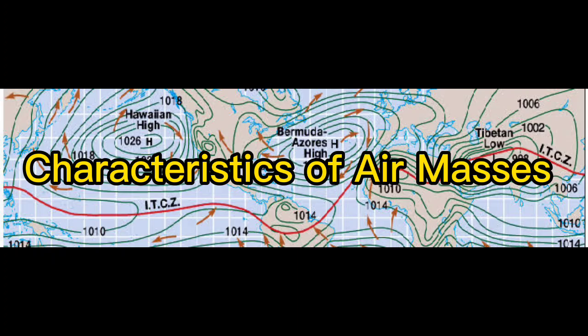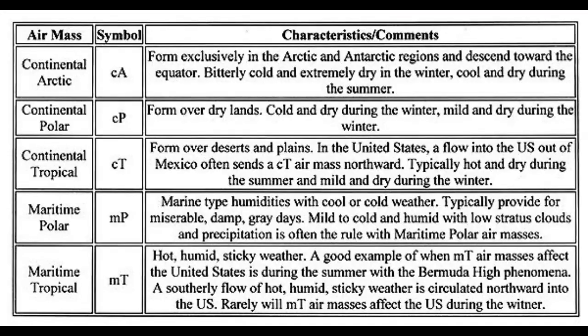Characteristics of air masses. In the first column we have the air mass, in the second column the symbol, and in the last column the characteristics or comments. Continental Arctic forms exclusively in the Arctic and Antarctic regions, descending toward the equator. It is bitterly cold and extremely dry in winter, and cool and dry during the summer.